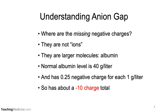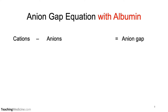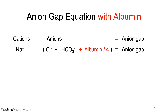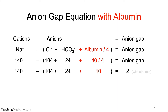So if we were including all of the cations and all of the anions, where are the missing negative charges? The answer is they're not actually ions — they are larger molecules, specifically albumin. A normal albumin level is 40 grams per liter, and albumin has a quarter charge for each gram per liter, so it has about a minus 10 charge when albumin levels are normal. If we hypothetically add albumin into the anion gap equation, since albumin has a quarter negative charge, we divide by 4, and the anion gap comes out to close to 0 — in this case, 2. There are many anions not included in this equation, so the answer is not likely to be exactly 0.